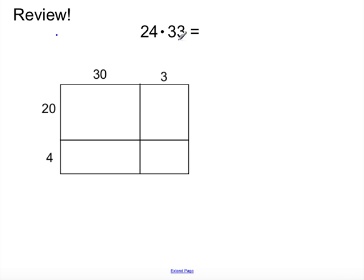And how we set this up is we're breaking apart the 24 and the 33 into tens and ones. So, the 24 becomes 20 and 4, and 33 becomes 30 and 3. 30 plus 3 is 33. So, that's the setup.